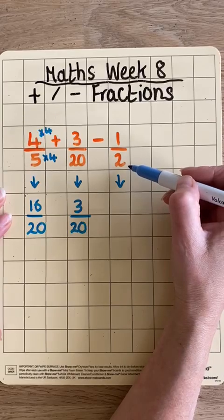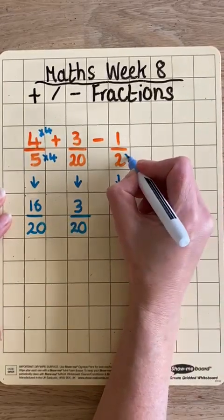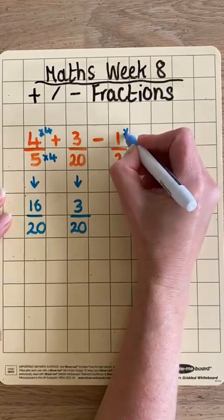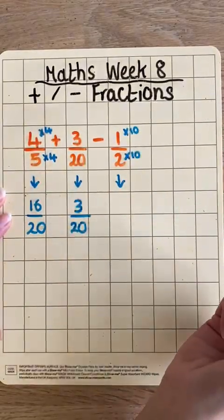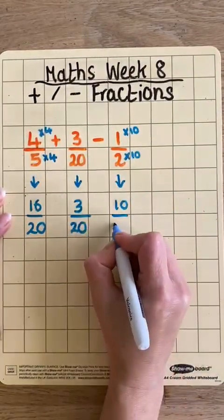The other fraction, the half, I need to make 2 into 20, so I times that by 10, and I need to do the same with the numerator, times it by 10. 1 times 10 is 10, 2 times 10 is 20.